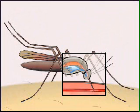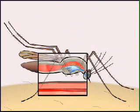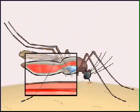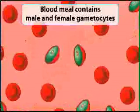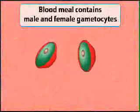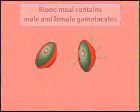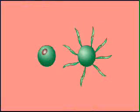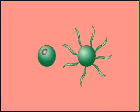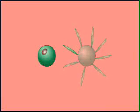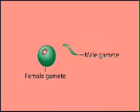The gametocytes do not harm the human host, but when a mosquito takes the gametocytes into its gut during a blood meal, these cells initiate the next stage of the Plasmodium life cycle. In the mosquito's gut, the gametocytes escape from the red blood cells and develop into male and female sex cells called gametes.